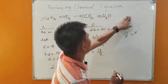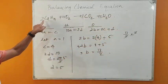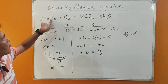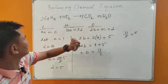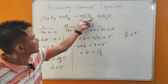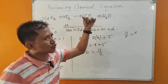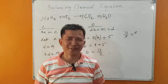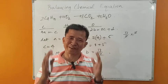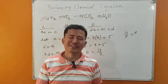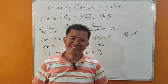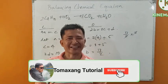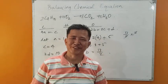Let's verify: carbon — 2 times 4 is 8 on the left, 8 on the right. Hydrogen — 2 times 10 is 20 on the left, 10 times 2 is 20 on the right. Oxygen — 13 times 2 is 26 on the left; 8 times 2 is 16 plus 10 is 26 on the right. The equation is balanced. I hope you understood the method — it will be very helpful for stoichiometric calculations. Please don't forget to subscribe and click the bell icon. Thank you.